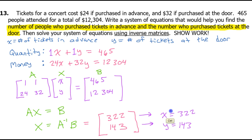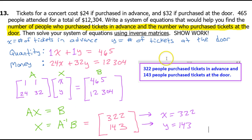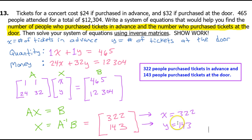Before we call ourselves finished, we need to go back to words. We were supposed to find the number of people who purchased tickets in advance and at the door. So the final answer is: 322 people purchased tickets in advance and 143 people purchased tickets at the door. If you just leave it as X and Y, you won't get full credit.